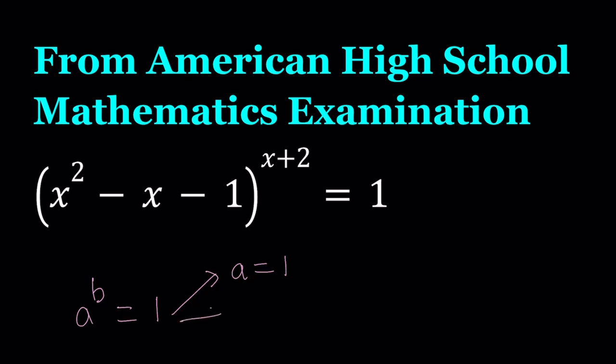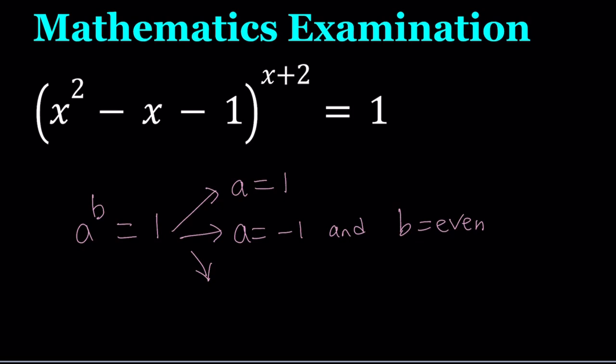Second case is A equals negative 1, and B is even, because negative 1 to the power any even integer is going to be positive 1. And the third case scenario, that's why this is special. Normally, these kinds of equations are not going to produce this many cases, but with 1, it's a different scenario. What is the third one? The third one is the exponent being 0, because if you have something to the power of 0, it's always 1, with the exception of a 0 base, so A should not equal 0, and B must be 0.